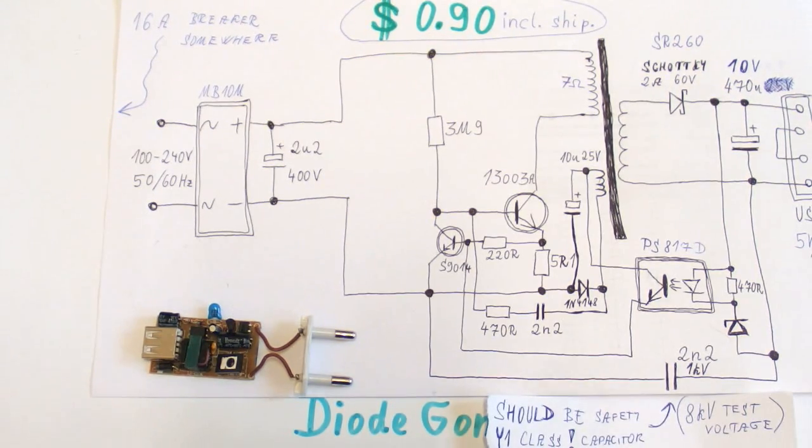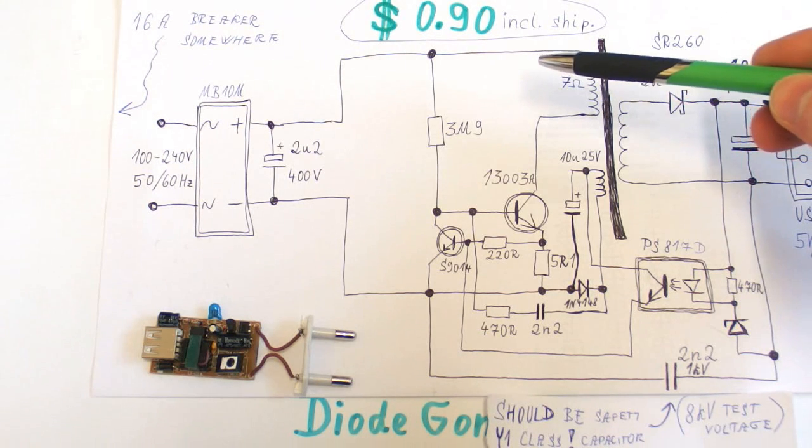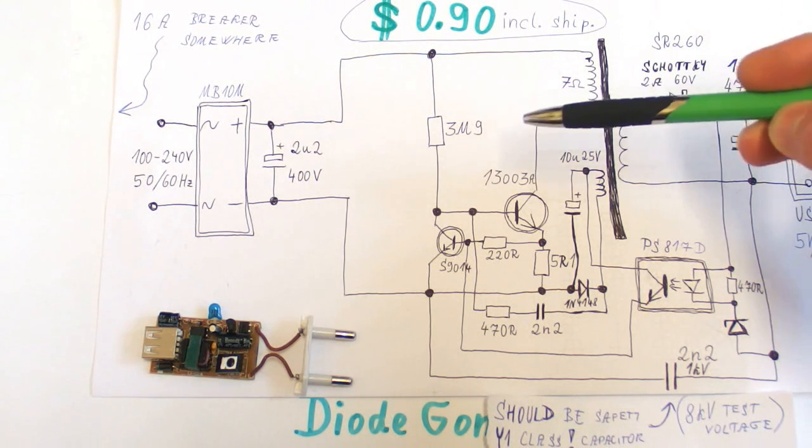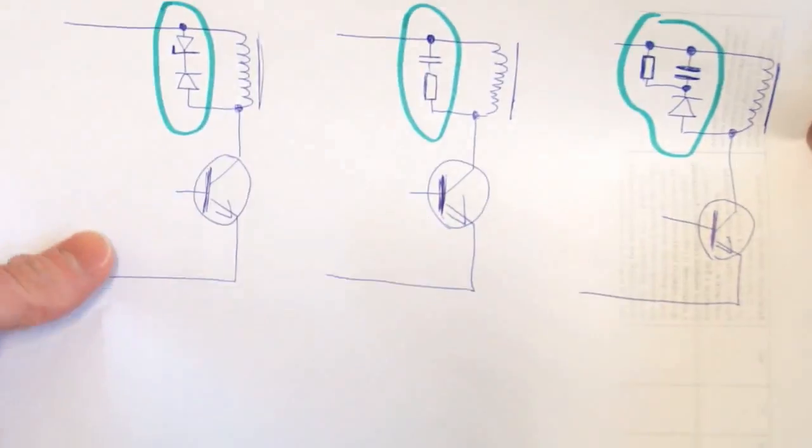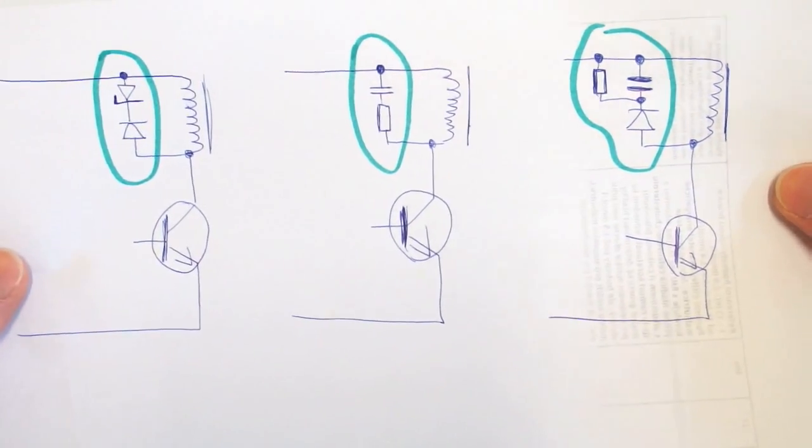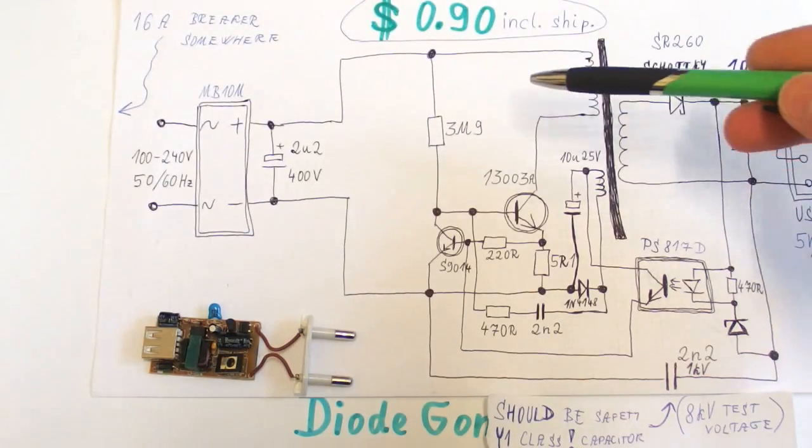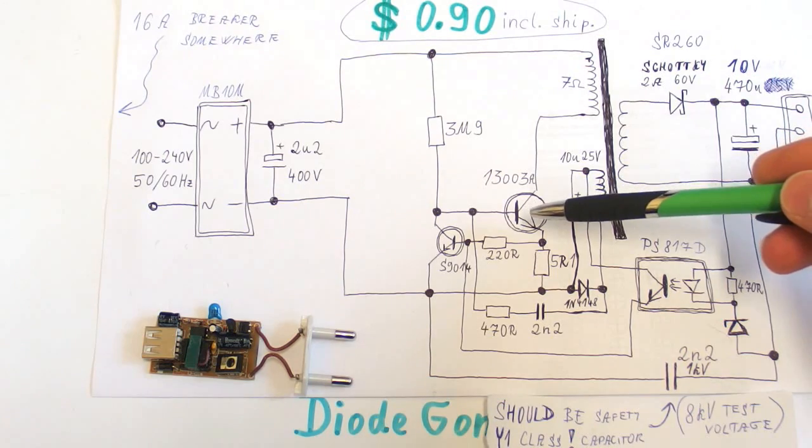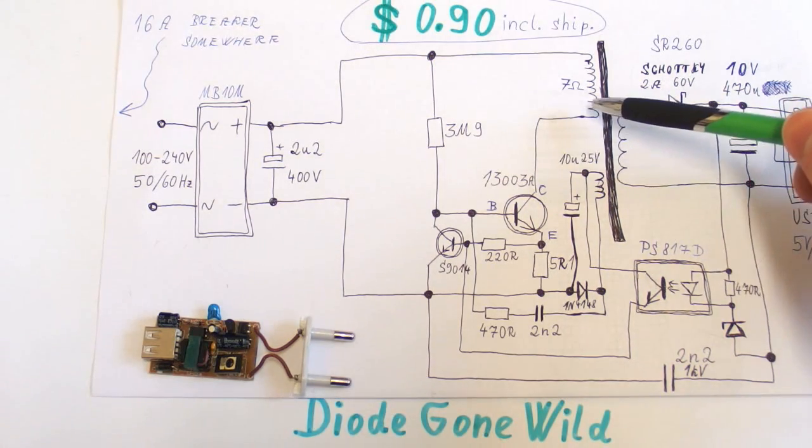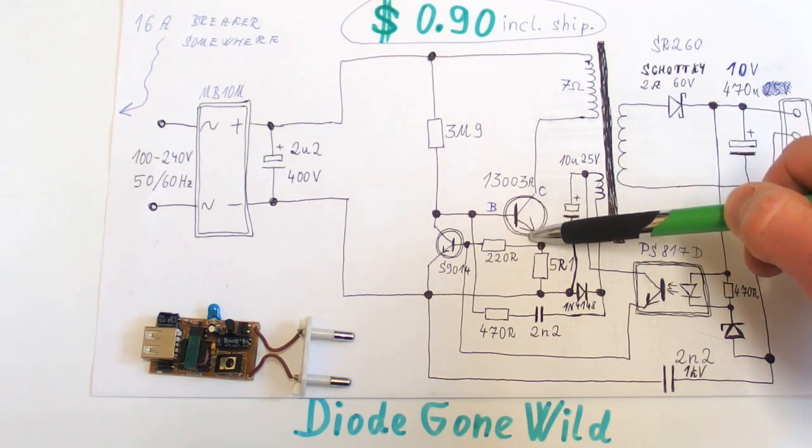Another problem comes to my mind. There is no snubber network to protect the transistor against the inductive spikes from the transformer. There should be something like this. There should be one of those three circuitries to protect the transistor. And because there is none, the transistor is very likely to go short. So the inductive spike from the primary can very easily break down the transistor.